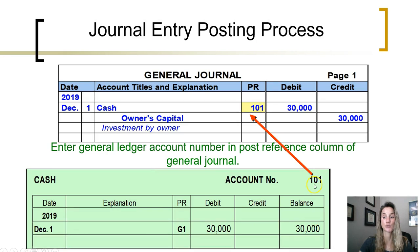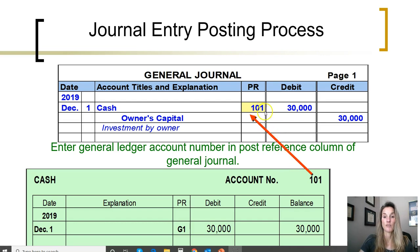The final step is to post reference back to the general journal. That debit of $30,000 has been posted to account 101, the cash account, in the general ledger. We have a post reference going two ways: a post reference in the ledger showing where the debit came from — general journal, page 1 — and a post reference in the general journal showing where that debit was posted in the ledger, which is account 101. This journal posting process is now complete. We have posted the debit to the appropriate account in the ledger, causing that account to change. The next step would be to post the next line item in the general journal.